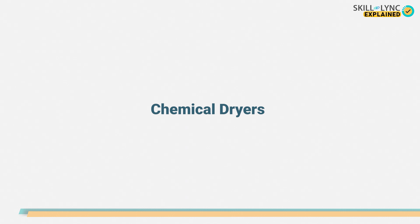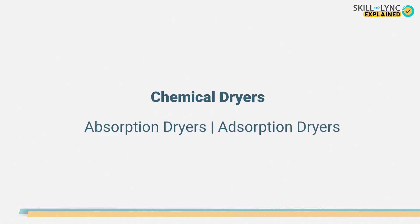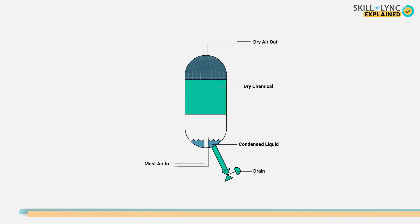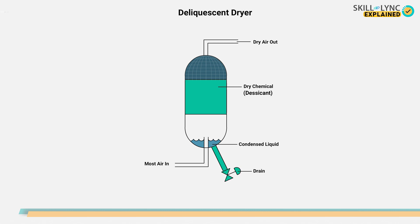Chemical dryers remove moisture by two processes: absorption and adsorption. In the first process, using a deliquescent dryer, the water vapor is slowly dissolved into a liquid by a chemical agent called a desiccant. This condensed liquid is then drained from the bottom.